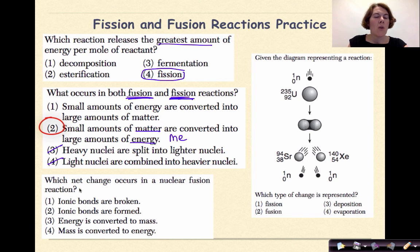Which net change occurs in a nuclear fusion reaction? Ionic bonds are broken. Ionic bonds are formed. Energy is converted into mass. Mass is converted into energy. The first two deal with chemical bonding, so those are out. The other two is just making sure that you know that it's always going to be mass is converted into energy. So again, if you think ME, the M comes before the E, so matter into energy, which makes the right answer here number four.